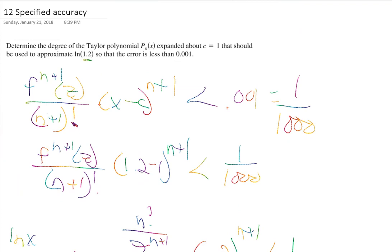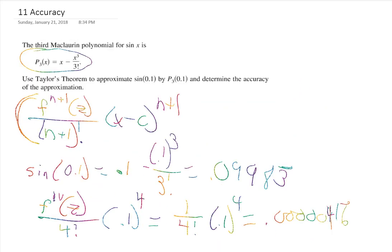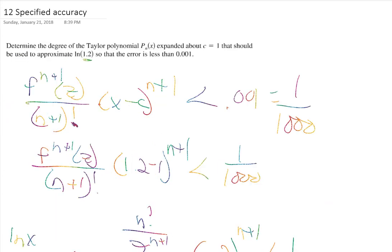Hopefully, especially those looking at engineering, you can see where this would be very useful. These are the two main components: being able to determine the accuracy of an approximation, and finding out how far you need to go to get a specified accuracy. Any problems you encounter should be some variation of those. I encourage you to review these and reach out if you have any questions.